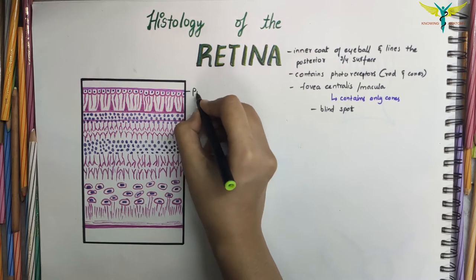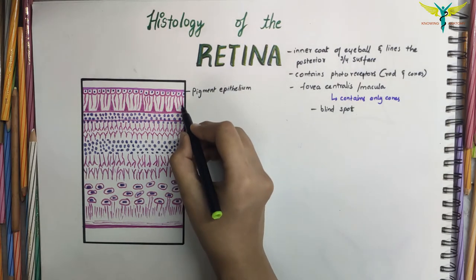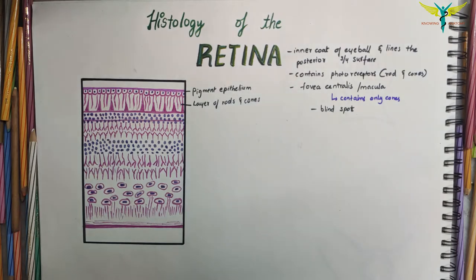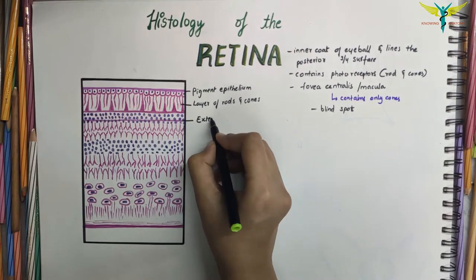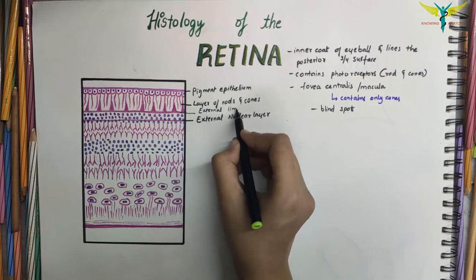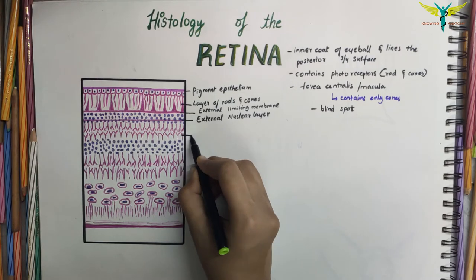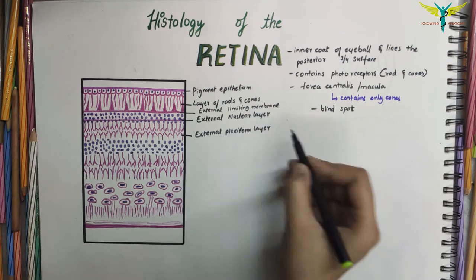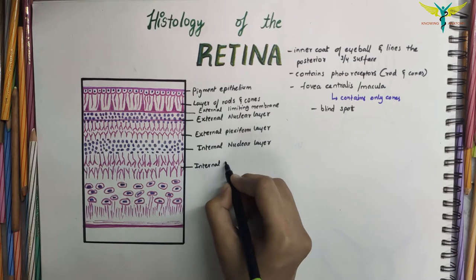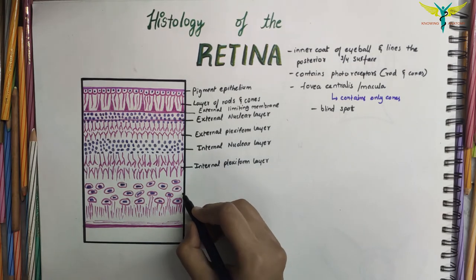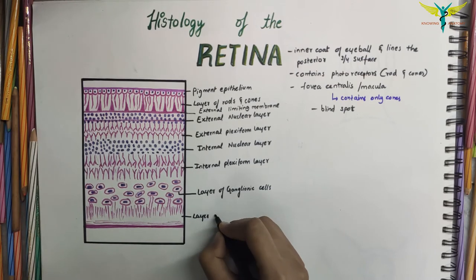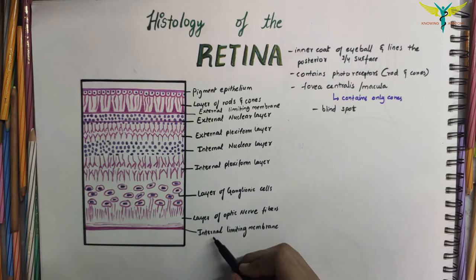The layers of the retina are: the pigment epithelium, the photoreceptor cell layer (the layer of rods and cones), the external nuclear layer, the external limiting membrane, the external plexiform layer, the internal nuclear layer, the internal plexiform layer, the layer of ganglion cells, and the layer of optic nerve fibers and internal limiting membrane.